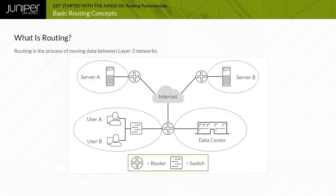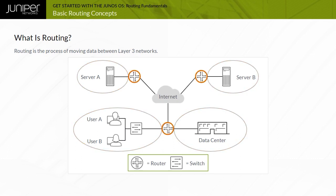Routing, in its most basic form, is the process of moving data between Layer 3 networks. The sample topology shown in the example consists of several Layer 3 networks, all connected to routers. Although routers are the most common devices for performing routing operations, note that many switches and security devices also perform routing operations.